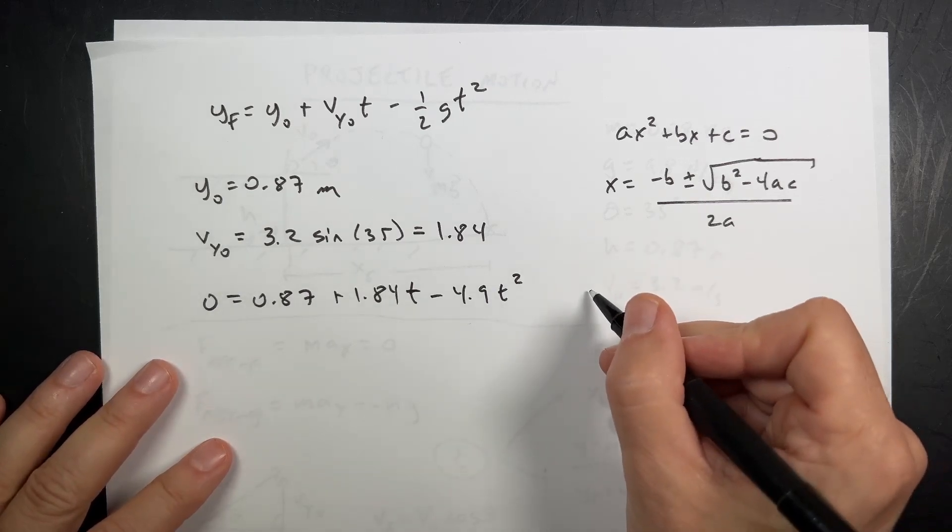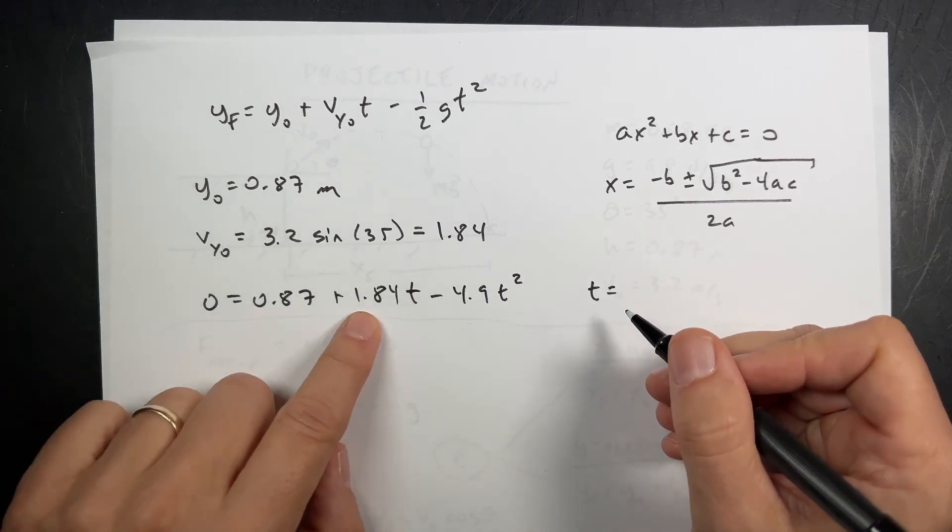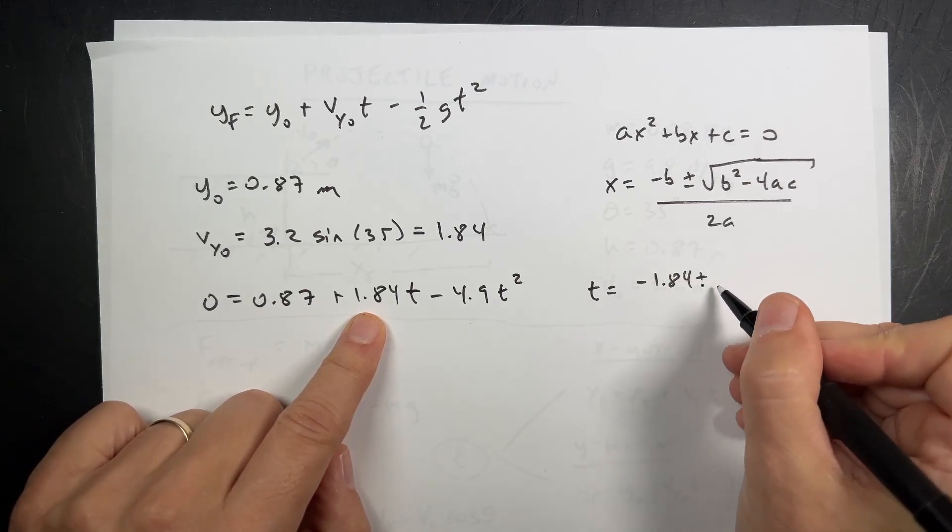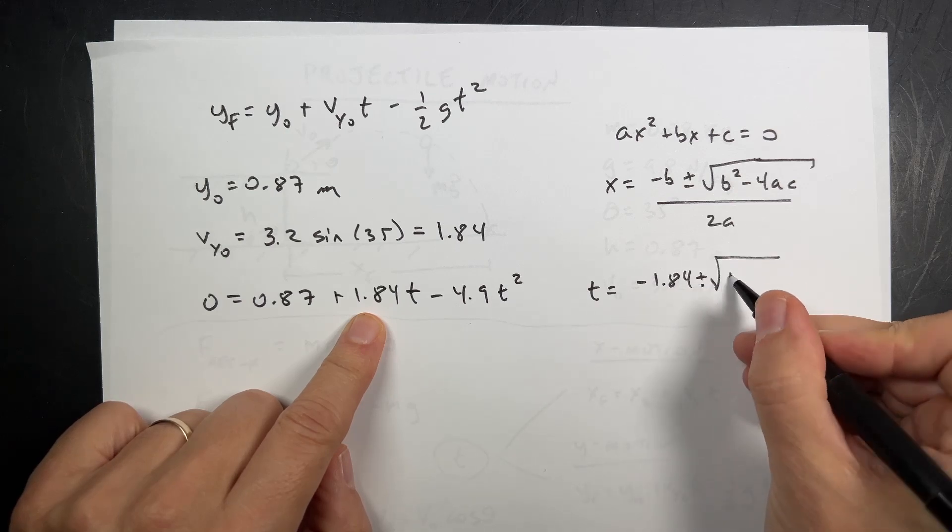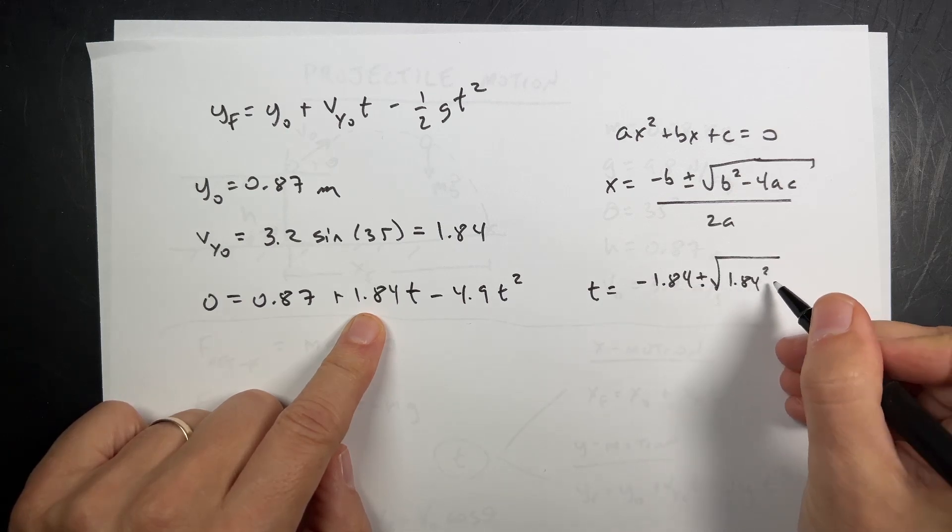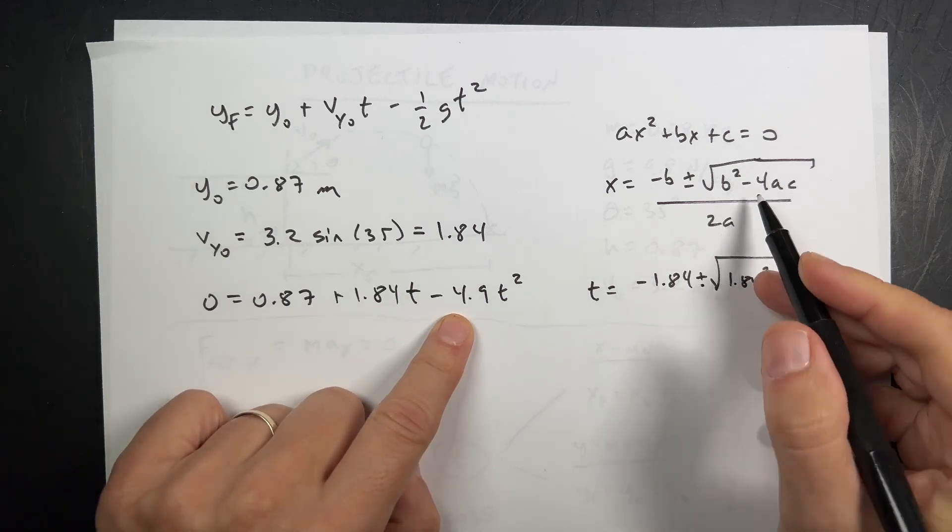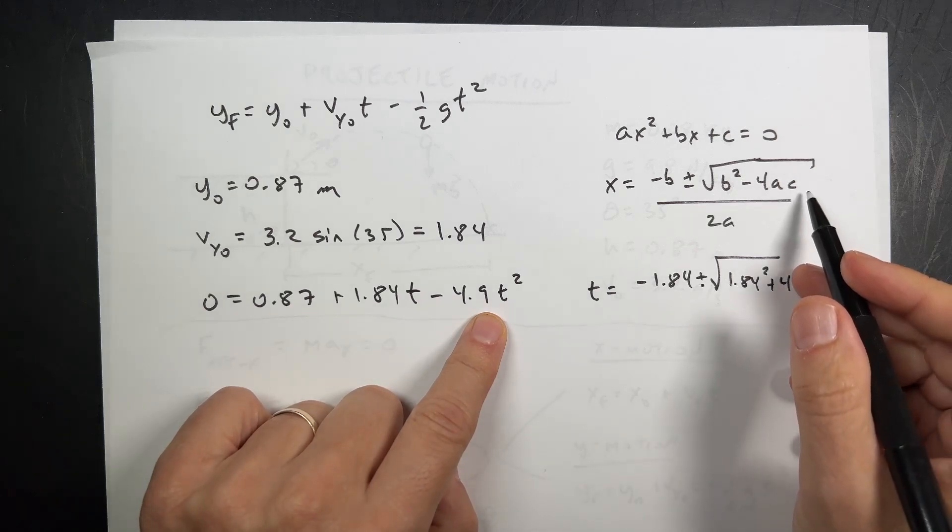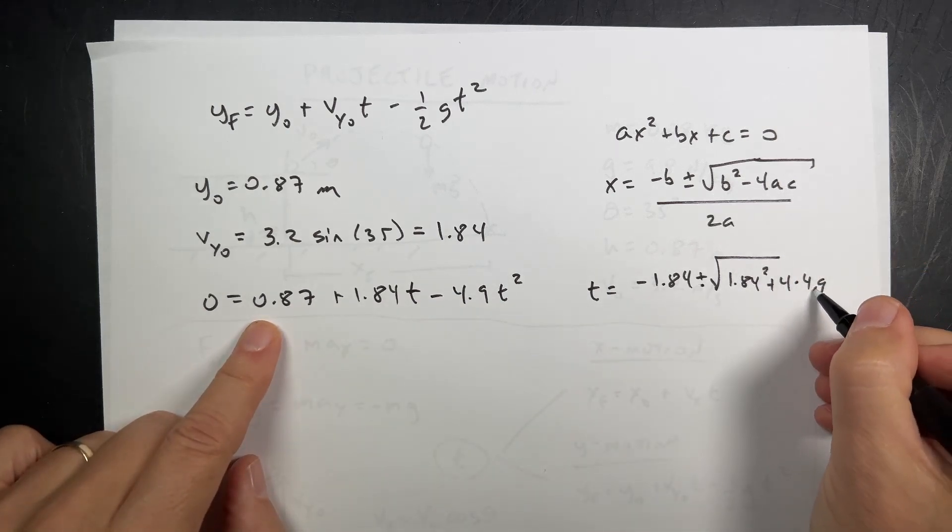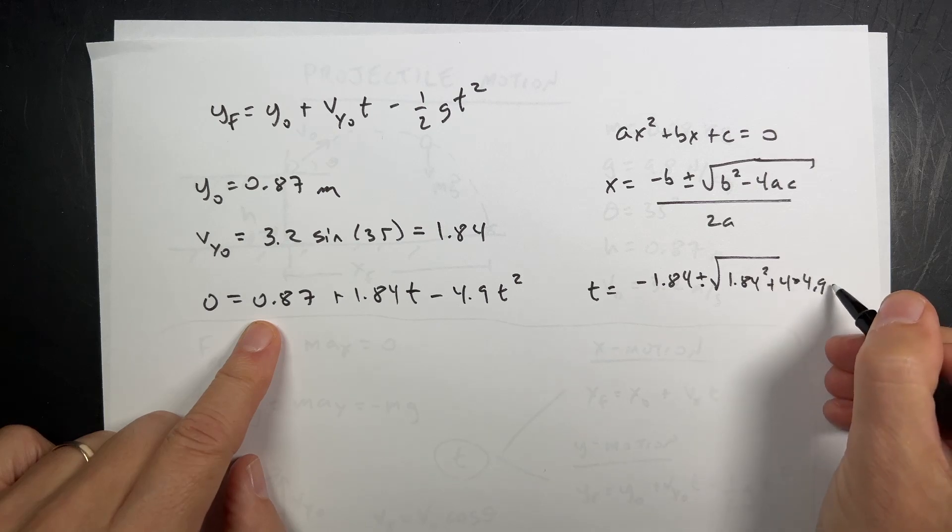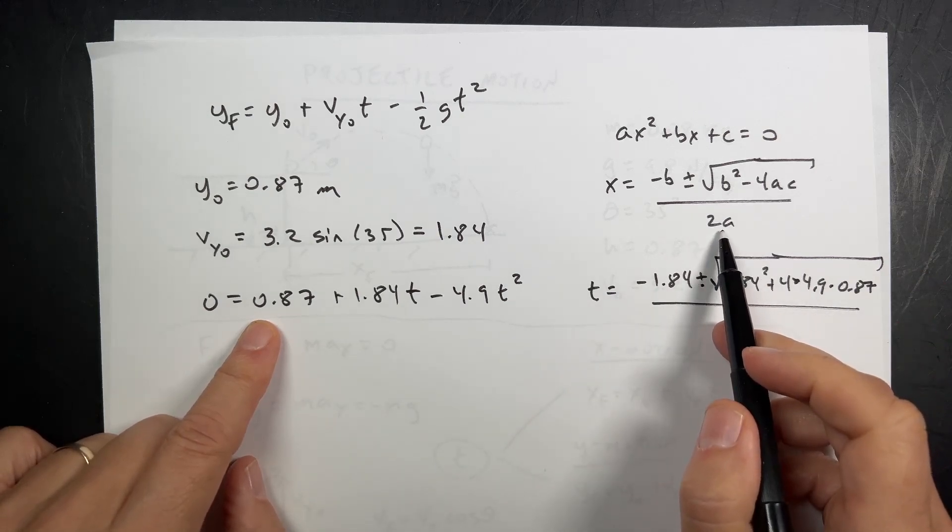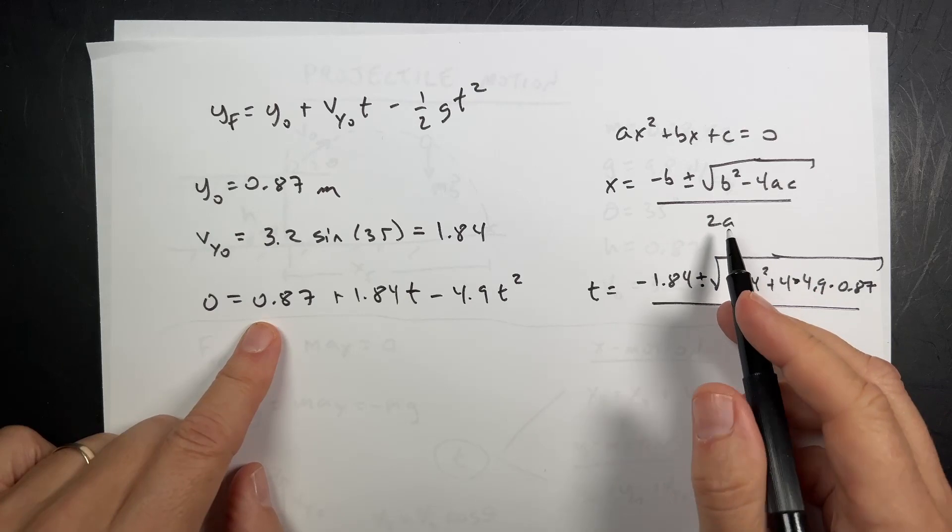The solution is x equals negative b plus or minus the square root of b squared minus 4ac over 2a. So we need to put in, in this case, b is this, right? It's the term in front of the T or the x. A is negative 4.9 and c is 0.87. So let's do it with a plus. T equals, I'm going to write it out, negative b. So it's negative 1.84 plus, not plus or minus, sorry. The square root of b squared, 1.84 squared minus 4 times negative 4.9. So plus 4.9 times c, which is this. That's a point and that's a times. 0.87. All of that's in the square root. And then all of that divided by 2a. And a is negative 4.9. Multiply that by 2, I get negative 9.8.